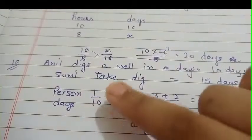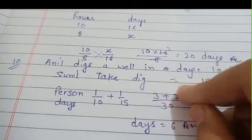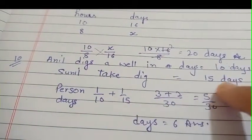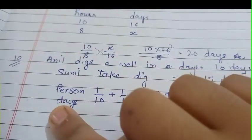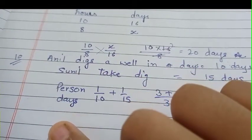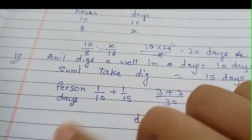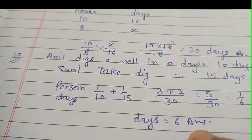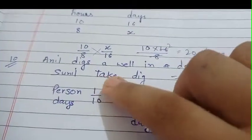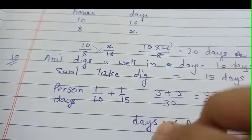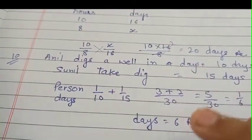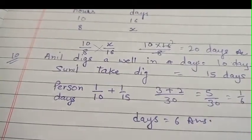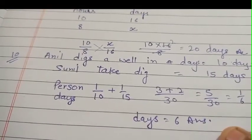10th question: Anil digs in 10 days, Sunil digs in 15 days. How many days will it take if they work together? 1 upon 10 plus 1 upon 15, which is 3 plus 2 upon 30, equal to 5 upon 30, which is 1 upon 6. So the days together are 6.